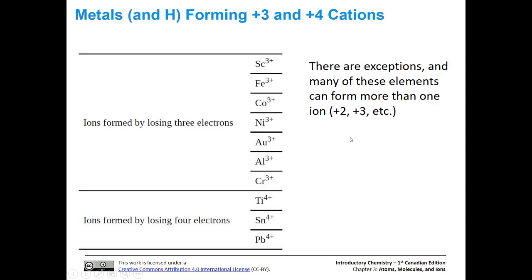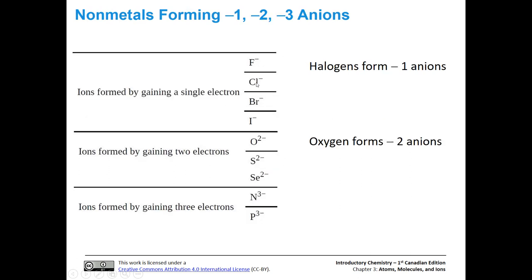Ions can also be formed by losing three electrons — here's a list of those. And even losing four electrons: titanium, tin, and lead can lose four electrons and generate four plus cations. Keep in mind that all of these are metals forming cations, with the exception of hydrogen, which also forms a cation.